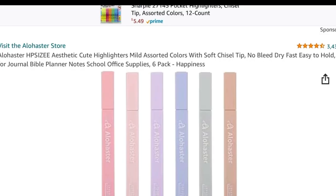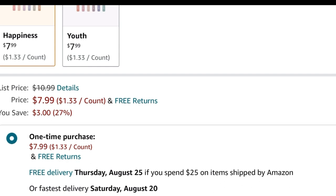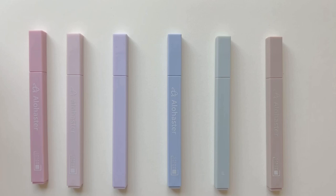Hi everyone, today I'm going to be reviewing Alihaster highlighters found on Amazon at the link in the description. Alihaster highlighters come in a six-pack of aesthetic muted colors. These highlighters are much better than traditional neon highlighters you've probably used.